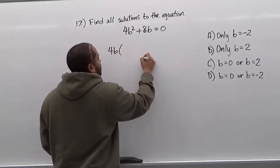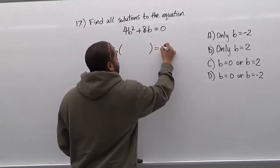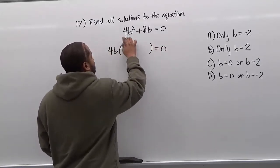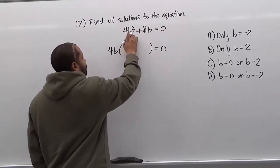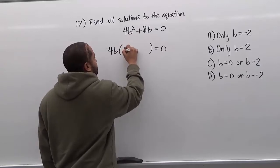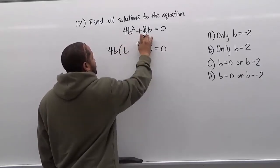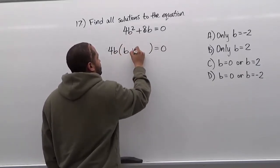And now what we have left in the parentheses here is going to be the result of the quotient of 4b squared plus 8b divided by 4b. So 4b squared divided by 4b is just b, and 8b divided by 4b is positive 2.